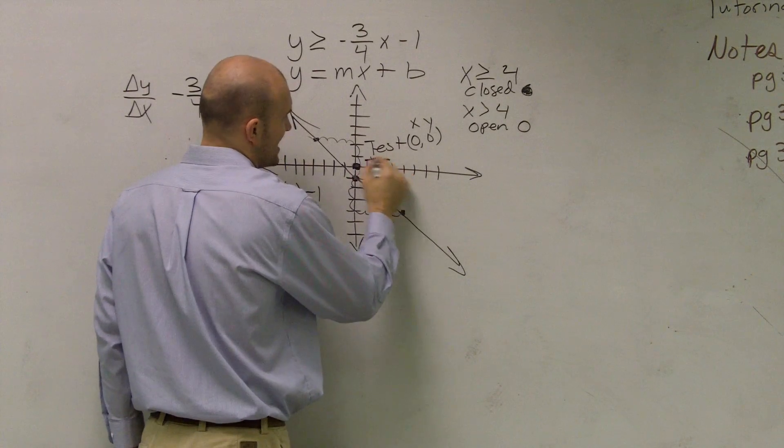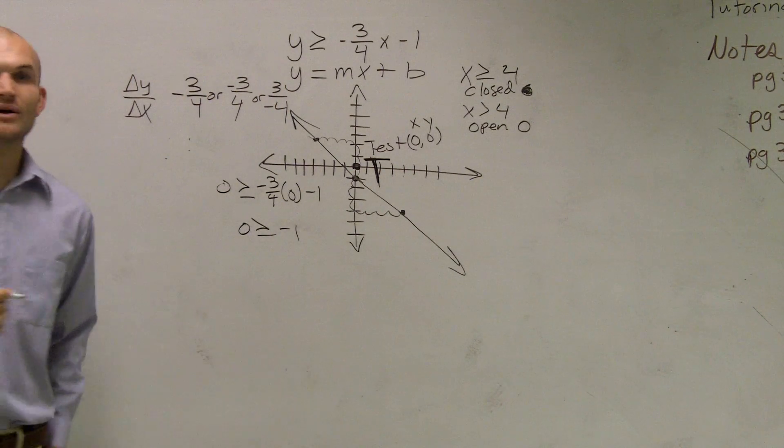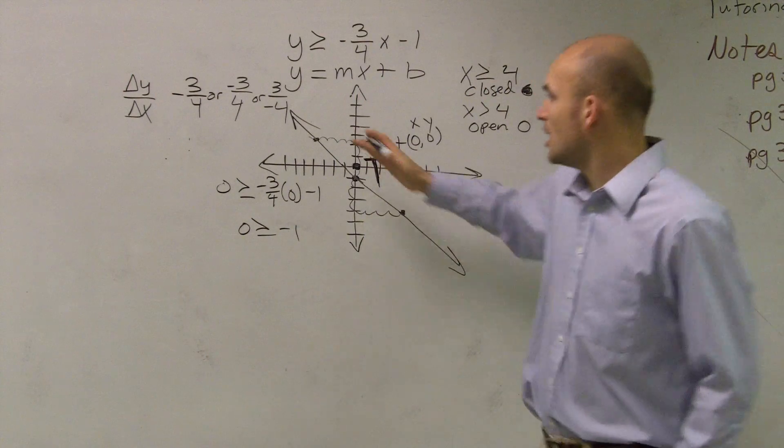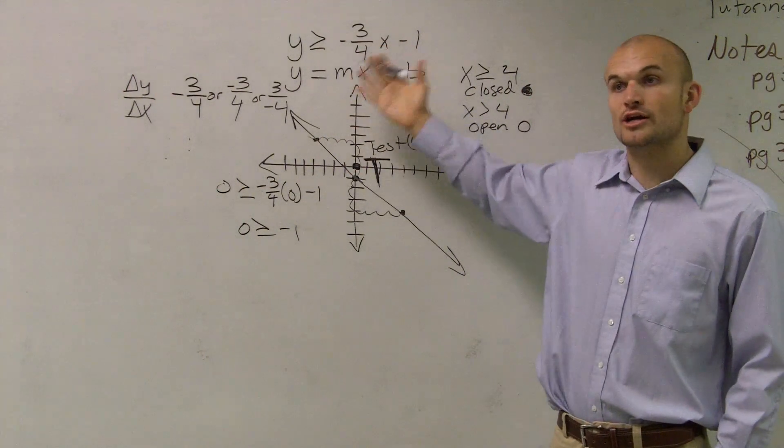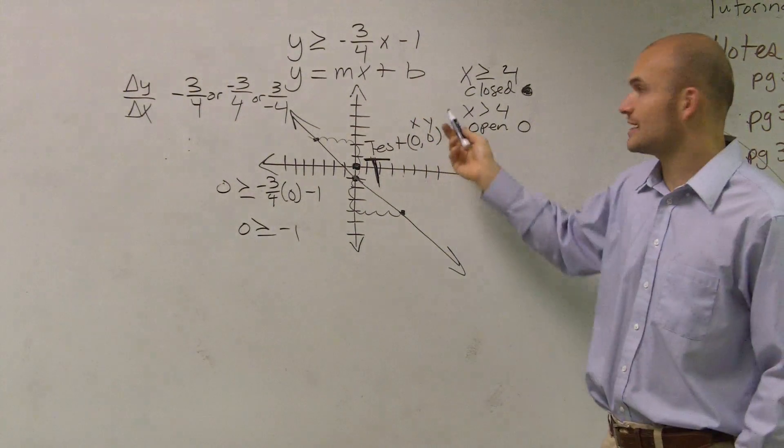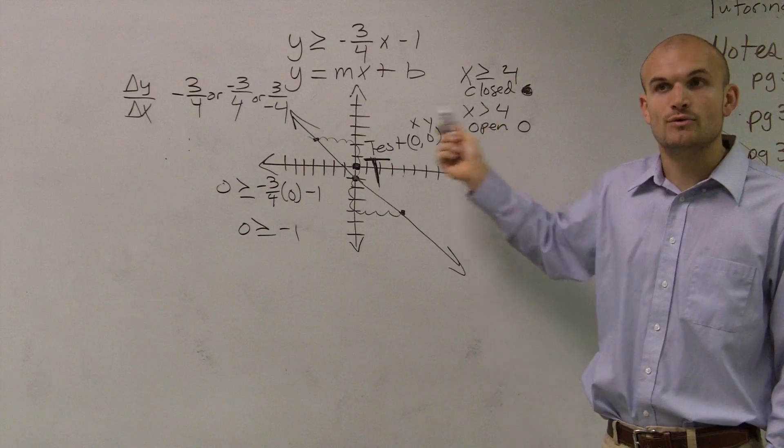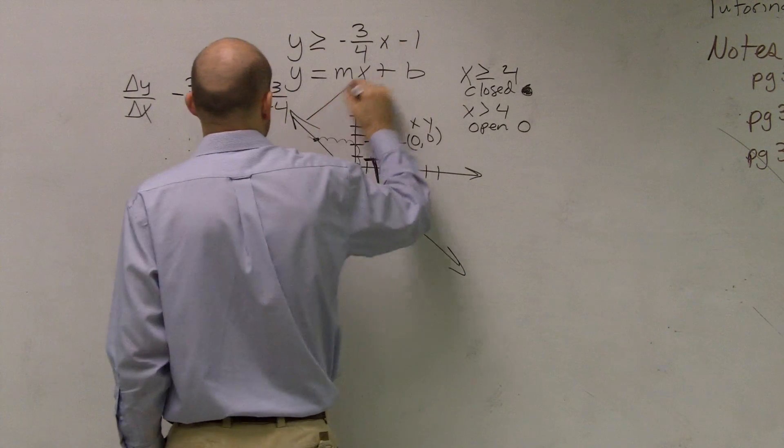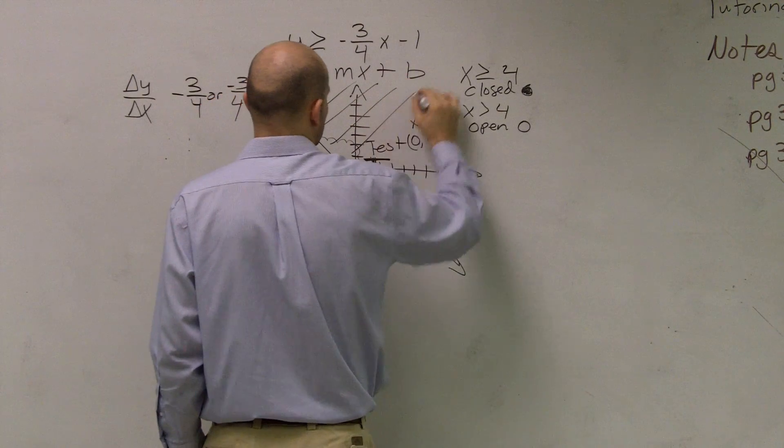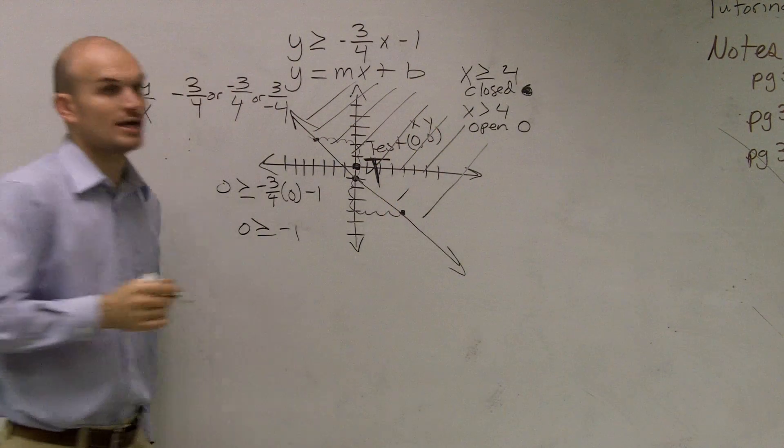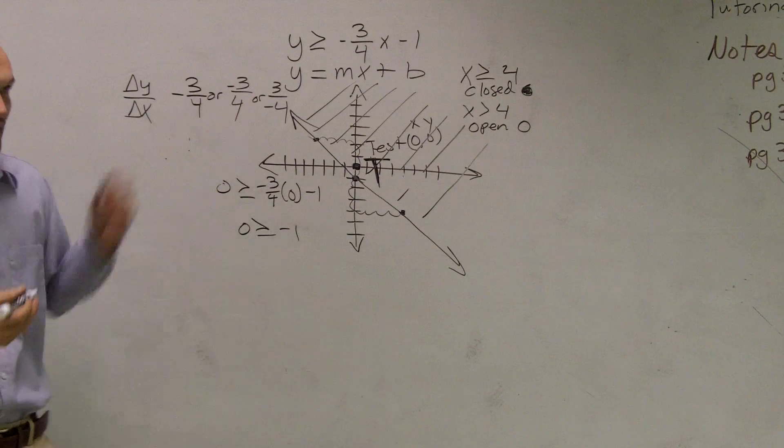So what I want you to do is make a nice big T. And what that T is going to tell you is that all values above our line are going to make our inequality true. So that is where you shade. Just like how we had a line graph, we shaded where all the points were true. All the points above our graph are going to make it true. So that is where you shade. Now we have complete.